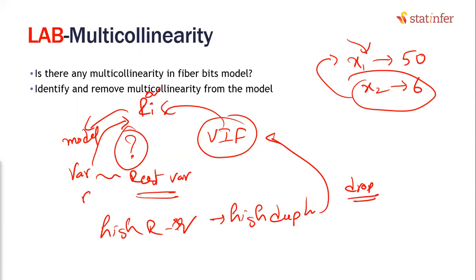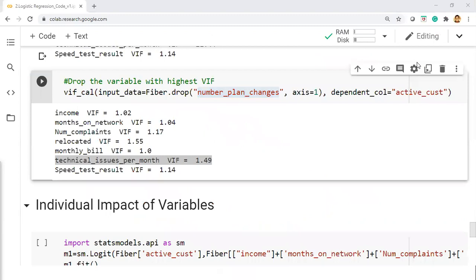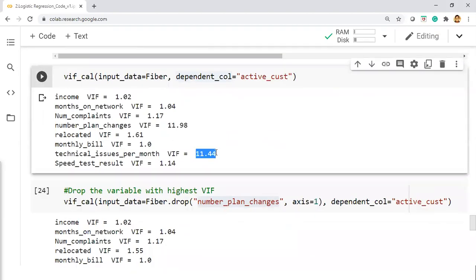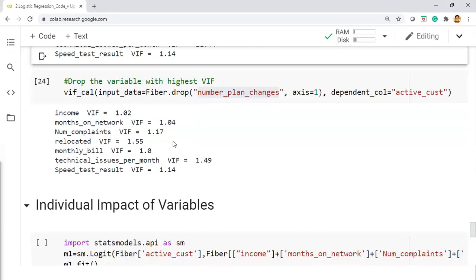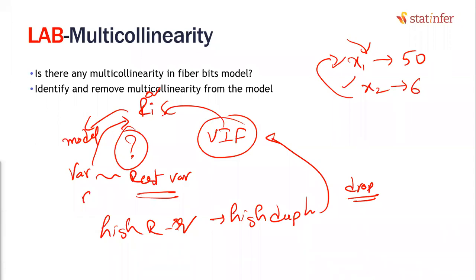If the big fish — the variable with VIF 50 — is still in the system after you drop X2 with VIF 6, there might still be redundancy. If VIF values are very close, like 50 and 49.5, you can drop either one — not a big deal. But if there's a very large difference, don't drop randomly. As a good practice, drop the one with the highest VIF. We already dropped the variable number of plan changes, which had the highest VIF. That is the story of multicollinearity and interdependency.